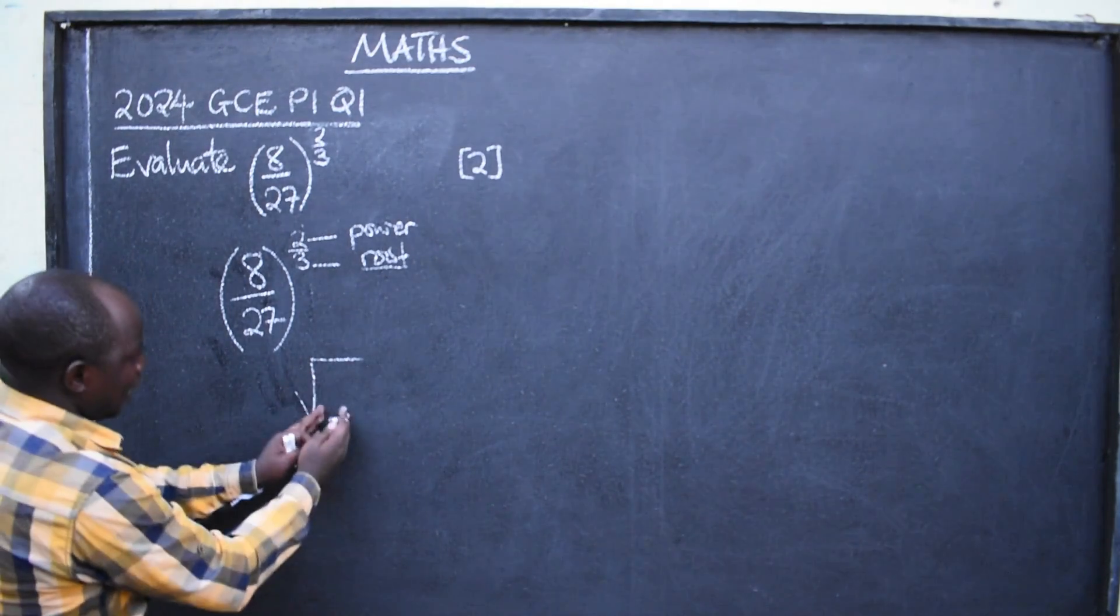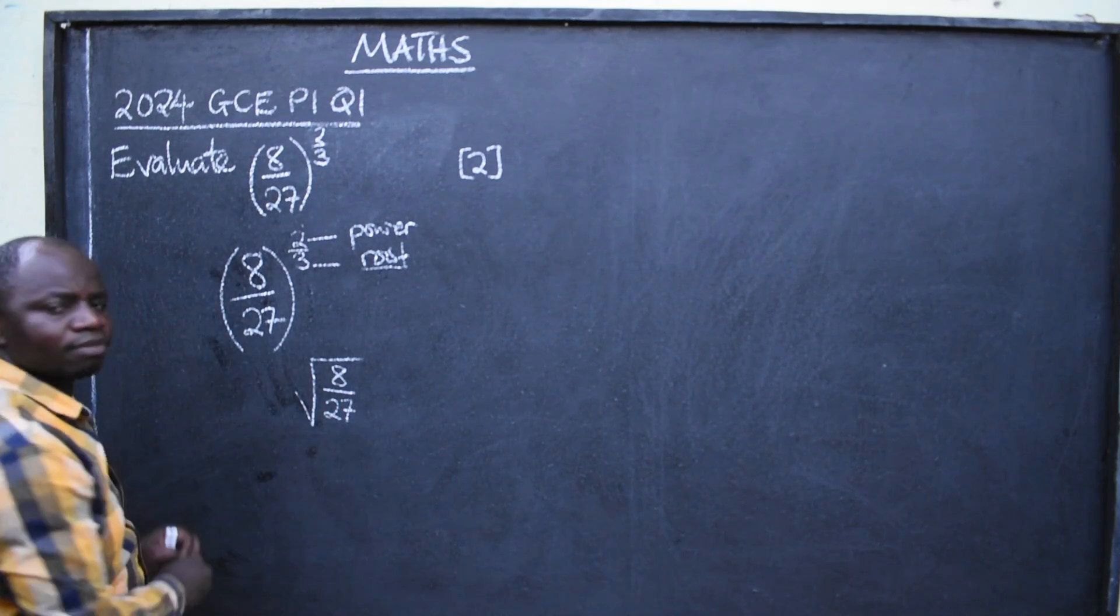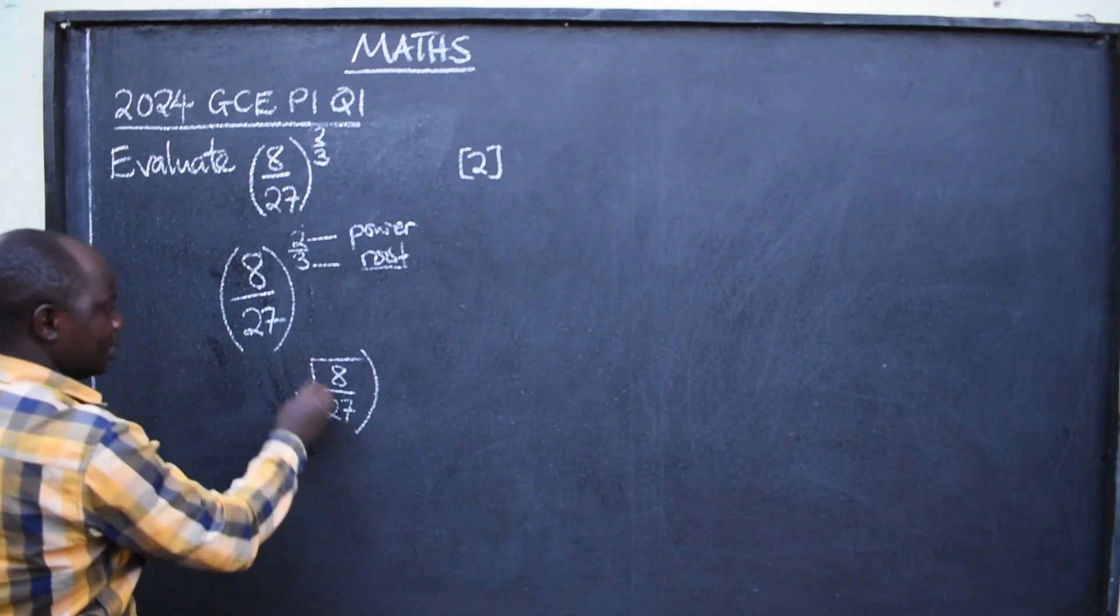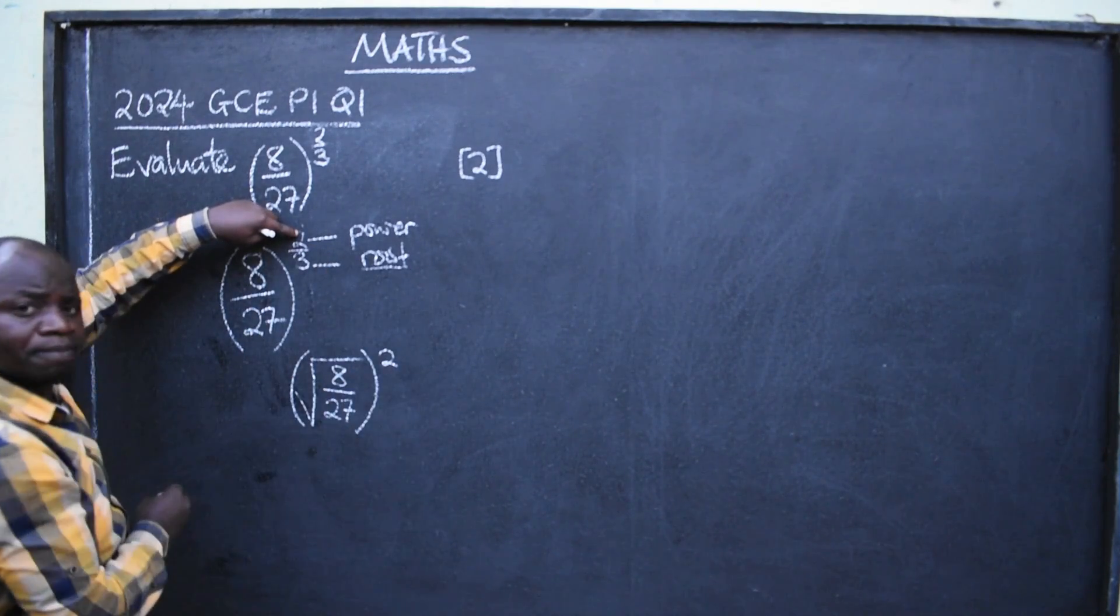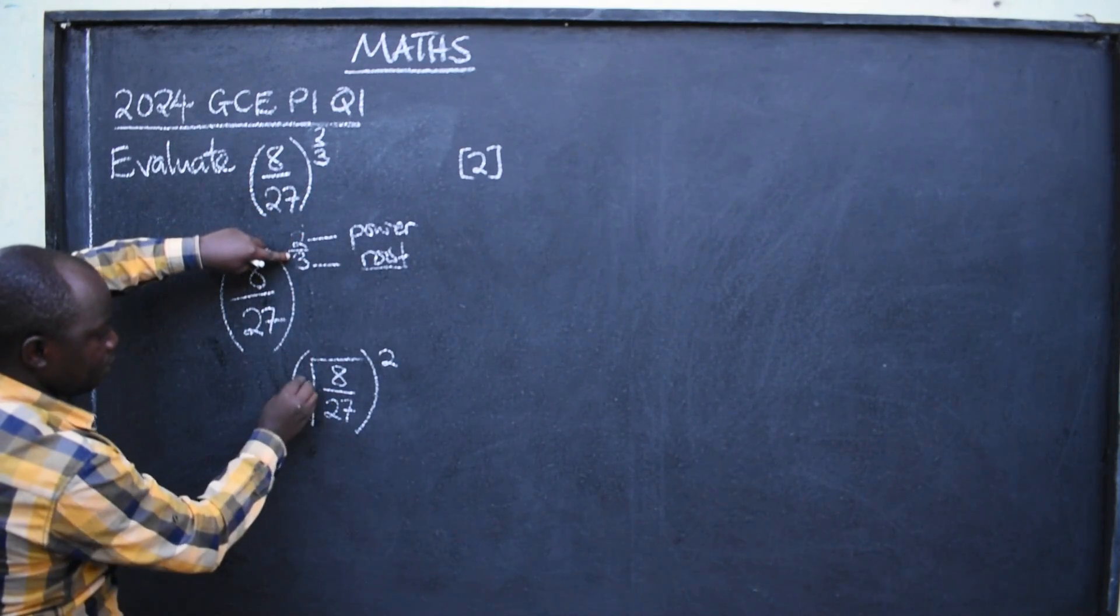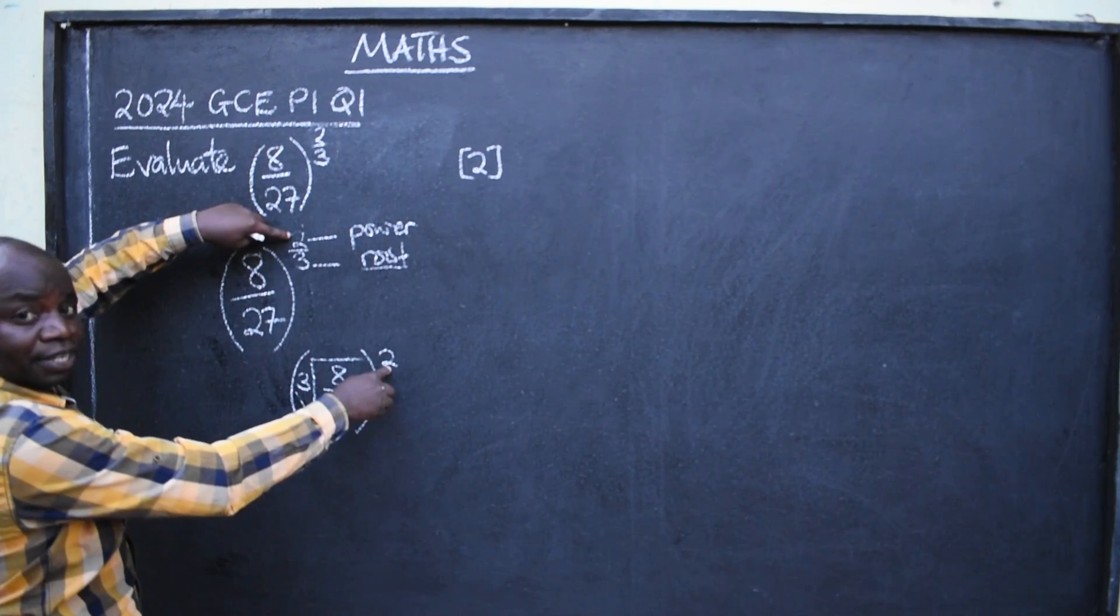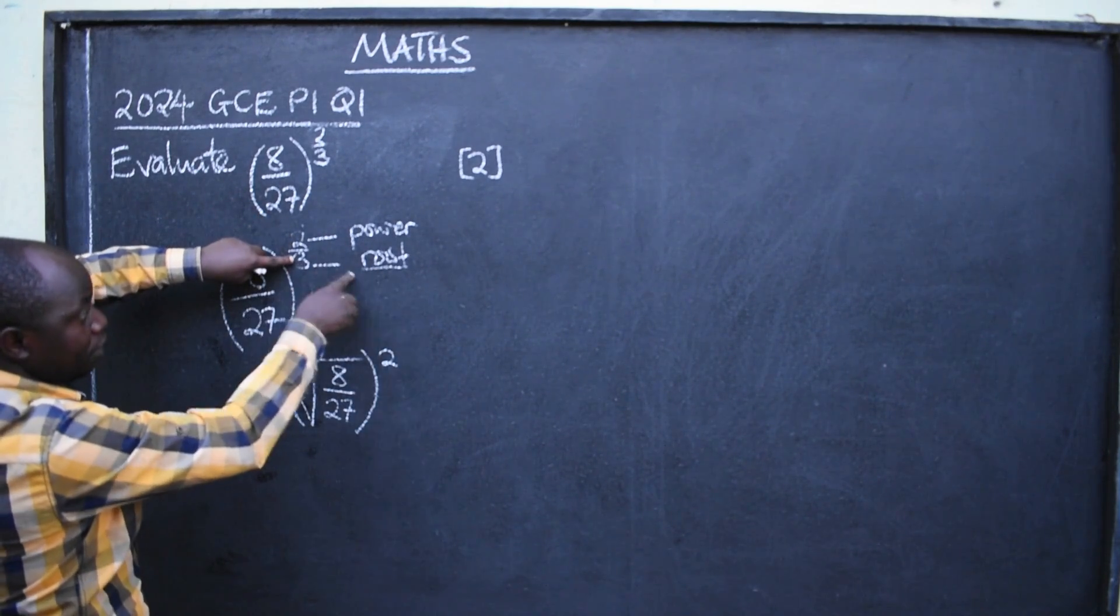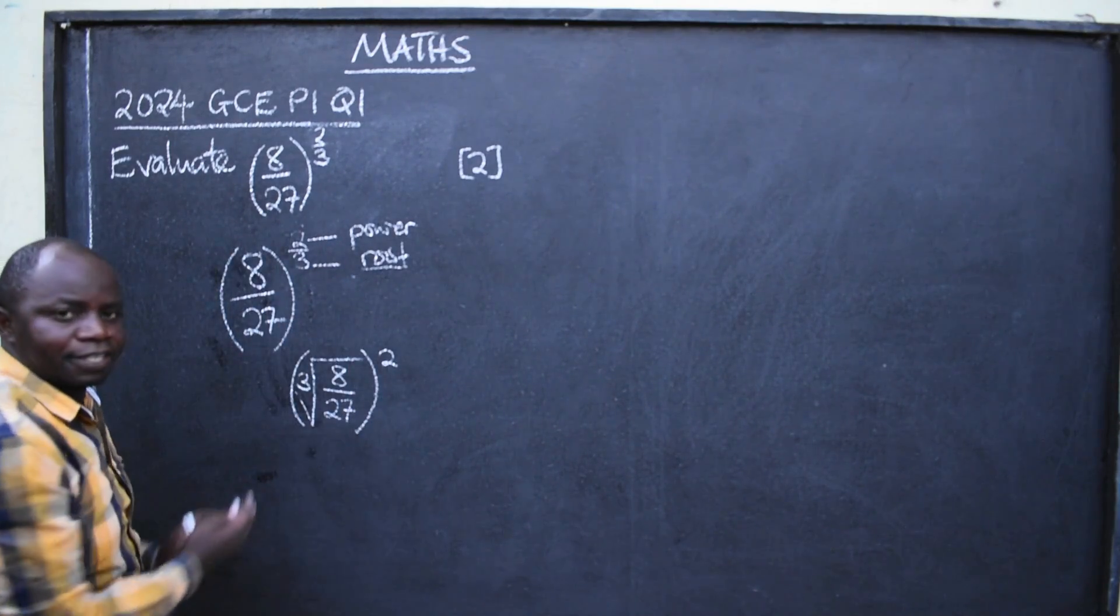It means you are going to convert or write this in another way because of this word root. Root is like this. I see that. Root is like that. So, inside here, I have got 8 over 27, like this. Put this in brackets. Power, it means this. Root, it means you write here. So, power, which is 2, write it here. This 3, which represents root, write it here. This is another way of writing.